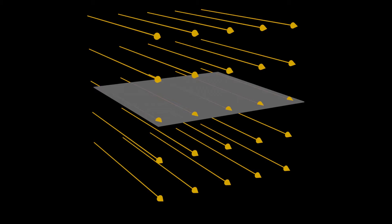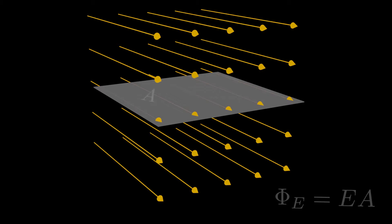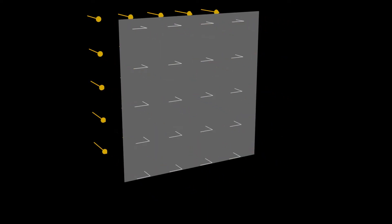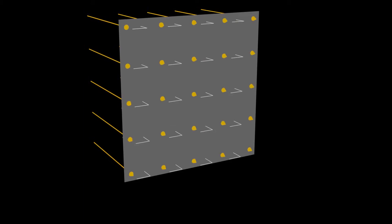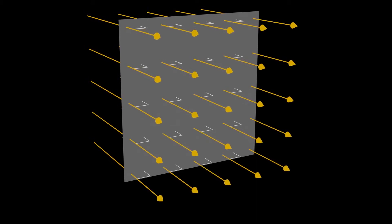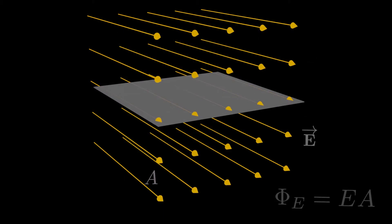So what do we do now? We have a formula that says the flux is E times A, but it doesn't look like the electric field or the area of the sheet has changed, and we're expected to believe the flux is supposed to be zero here? The problem is our formula is only true if the electric field is perpendicular to the area. Once we twist the sheet, all bets are off, and we need to figure out a different way of representing the electric flux.